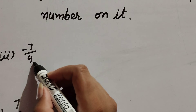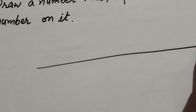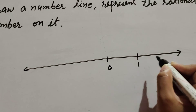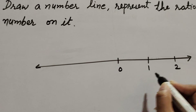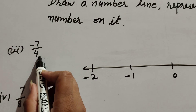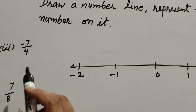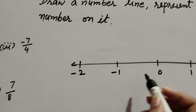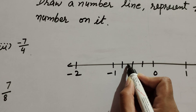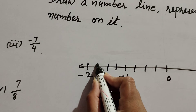Question number three: minus seven over four. It is a negative rational number, so we represent this number on a number line. First we draw the line and divide it into equal sections. Positive numbers are to the right of zero and negative numbers to the left of zero. There is four in the denominator, so we divide each one-unit section into four equal parts: one, two, three, four. We divide the next section into four equal parts as well.